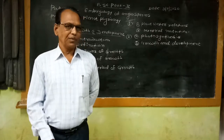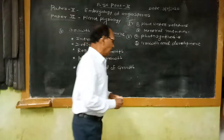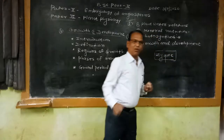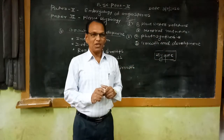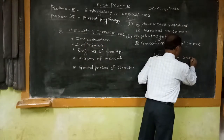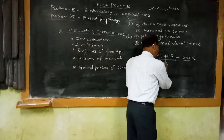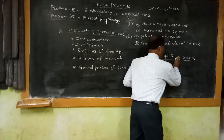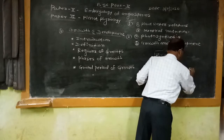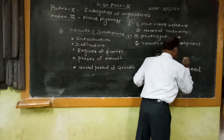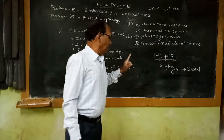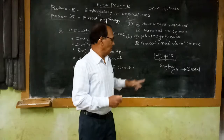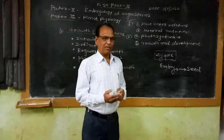Growth of the plant starts theoretically from the process of fertilization. When a male gamete unites with a female gamete, a zygote is formed. In flowering plants or seed-bearing plants, this zygote is located in the seed. The zygote further multiplies and forms an embryo, which is located inside the seed. This formation of zygote is the initial stage of growth.